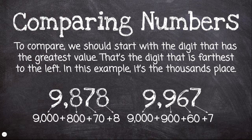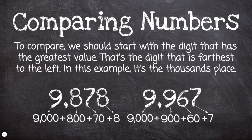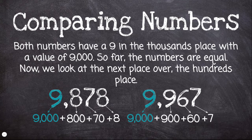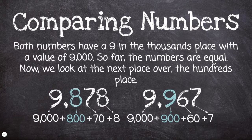To compare, we should start with the digit that has the greatest value. That's the digit that's farthest to the left. In this example, it's the thousands place. Both numbers have a 9 in the thousands place with a value of 9,000. So far, the numbers are equal. Now we look at the next place over — the hundreds place.